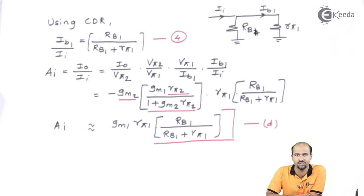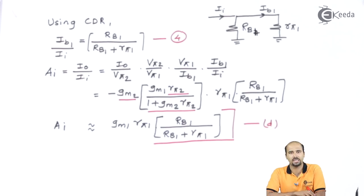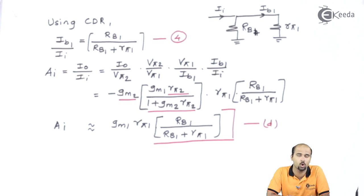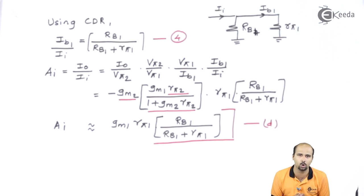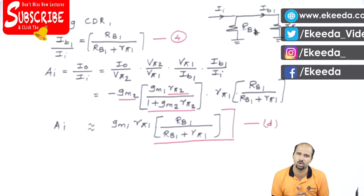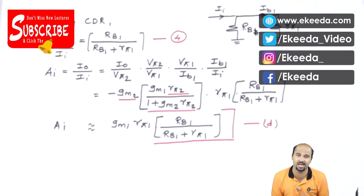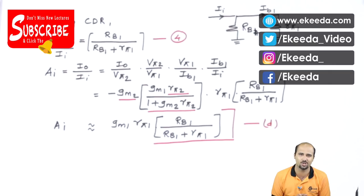We have now completed the AC analysis of the cascode amplifier with BJT configuration — obtaining voltage gain, current gain, input impedance, and output impedance. Stay tuned for further videos where we will look at numericals based on BJT as well as FET. Learn more with Ekeeda Videos — subscribe to the channel. Thank you.